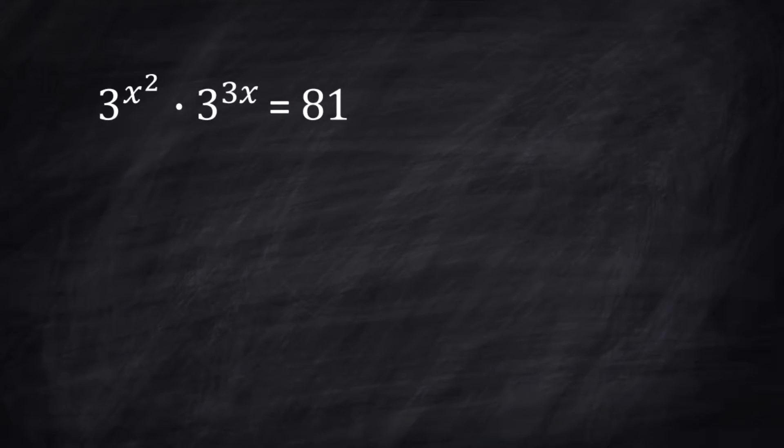Now we're taking a look at this one. This one has a little bit of a wrinkle in that these two things are being multiplied together. If you have a^m times a^n, you end up adding those exponents. So here we have 3^(x² + 3x) = 81, which is 3^4. So x² + 3x = 4.